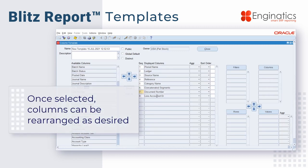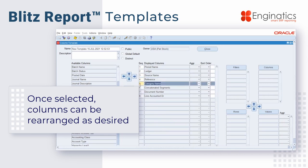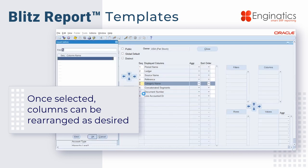Once we have the pieces of information we'd like on our report, we can rearrange them to our required layout. We can move these up, we can move them down, or we can simply type in here the position we'd like them to appear on, and they will move directly to that position.